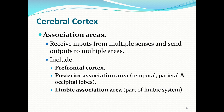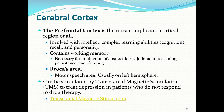Association areas receive inputs from multiple senses and send outputs to multiple areas. They include the prefrontal cortex, the posterior association area, and the limbic association area. The prefrontal cortex is the most complicated cortical region — it is involved with intellect, complex learning (cognition), recall, and personality. It contains working memory necessary for abstract ideas, judgment, reasoning, persistence, and planning. Broca's area is a motor speech area found on the left hemisphere within the prefrontal cortex region.